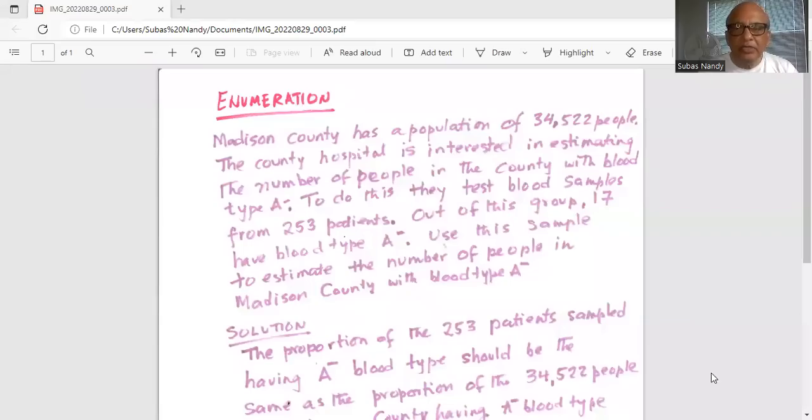Madison County has a population of 34,522 people. The county hospital is interested in estimating the number of people in the county with blood type A-. To do this, they test blood samples from 253 patients. Out of this group, 17 had blood type A-. Use this sample to estimate the number of people in Madison County with blood type A-.